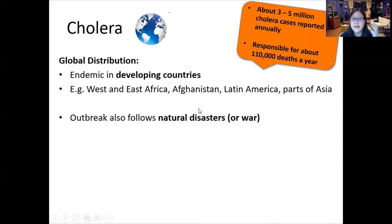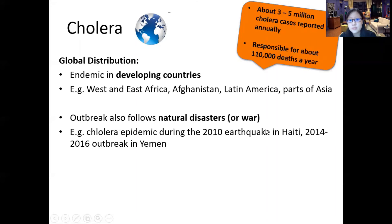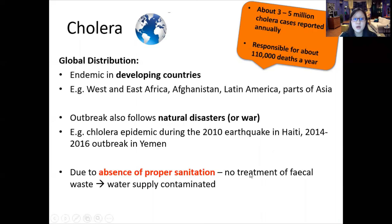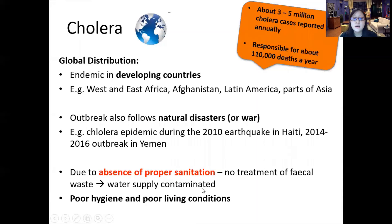Epidemics also follow natural disasters or war — a sudden increase in cases. For example, during the 2010 earthquake in Haiti, there was a cholera epidemic because people were displaced, water supplies were contaminated by floods, and clean water supply stopped. In Yemen in 2014 and 2016, a civil war displaced many people; there was no treatment of fecal waste, water supplies were contaminated, and there were poor hygiene and living conditions. Additionally, there was a lack of education about transmission and prevention.